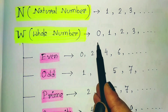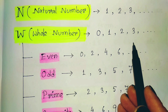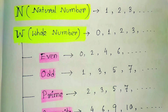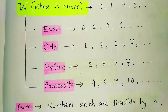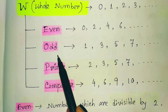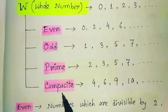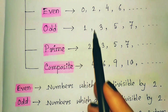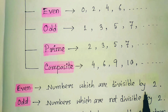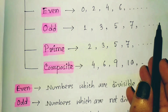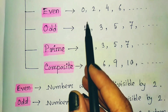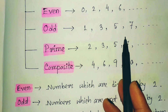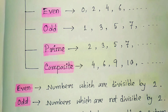If we include zero with the natural numbers, it becomes the whole number. From whole numbers we can identify even numbers, odd numbers, prime numbers, and composite numbers. Even numbers are divisible by 2: 0, 2, 4, 6 — the smallest even number is 0. Odd numbers are not divisible by 2, and the smallest odd number is 1.